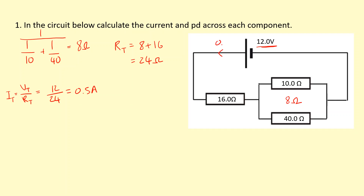So 0.5 amps comes out and flows through this resistor. However, then it's splitting up at this junction. Now that we know the current through this resistor, we can work out the voltage using V equals IR. So V equals 0.5 times 16, which gives me 8 volts across this.